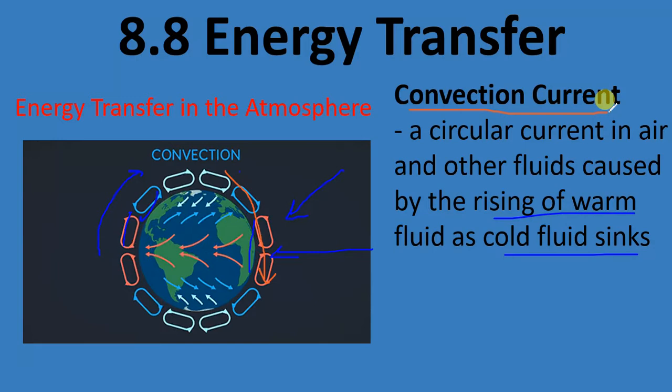You can see a convection current in a science class. You've got a tank of water, you put in some warm water with food coloring and cold water with a different color, and the hot will rise to the top while the cold stays at the bottom.